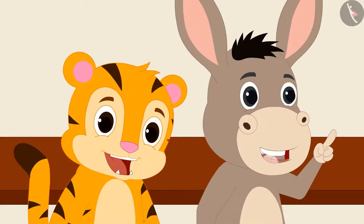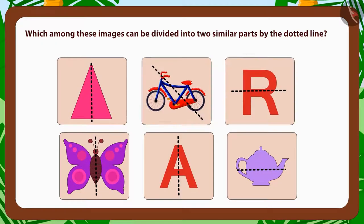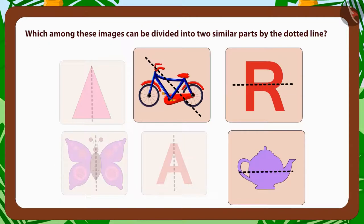Children, can you guess which among these images can be divided into two similar parts by a dotted line? Wow, you are smart! These are images that are being divided into two similar parts by the dotted lines. And these are not getting divided into two similar parts.